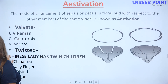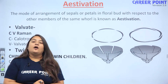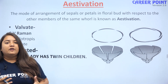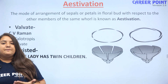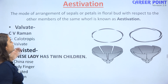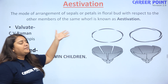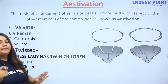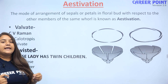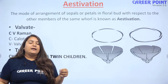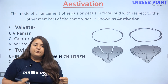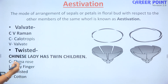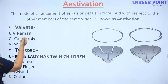Ab estivation pe. Estivation mein kya kya hota hai? It is the arrangement of the sepals or petals in the floral parts. But is mein kya hai? Joh types of estivation hoti hain, hame uske examples mein problem face hoti hai. Toh hum kya karenge? Isko yaad karne ki trick bataayenge.